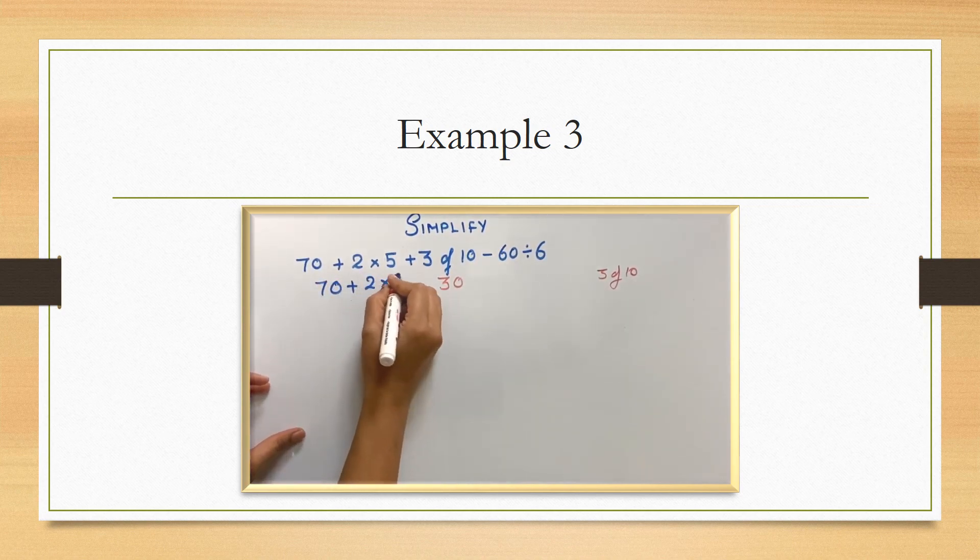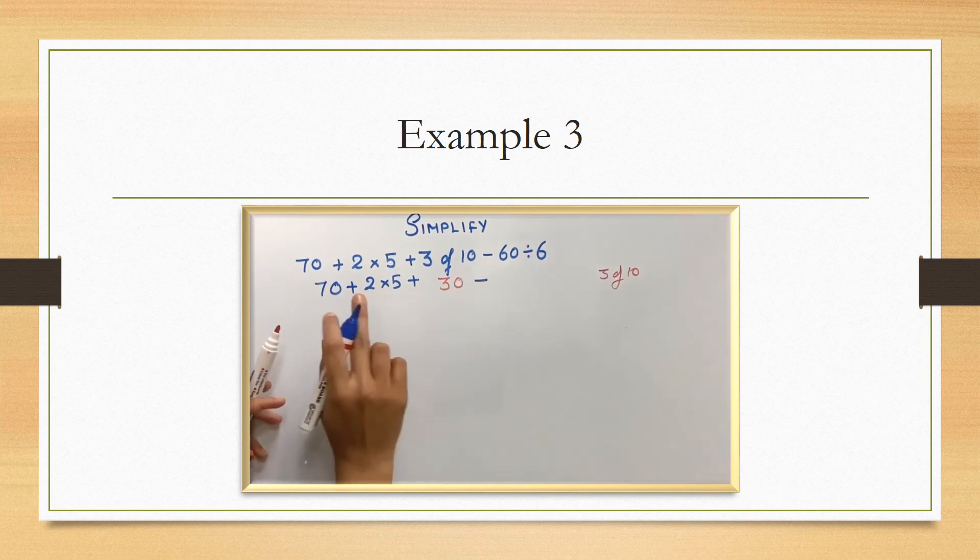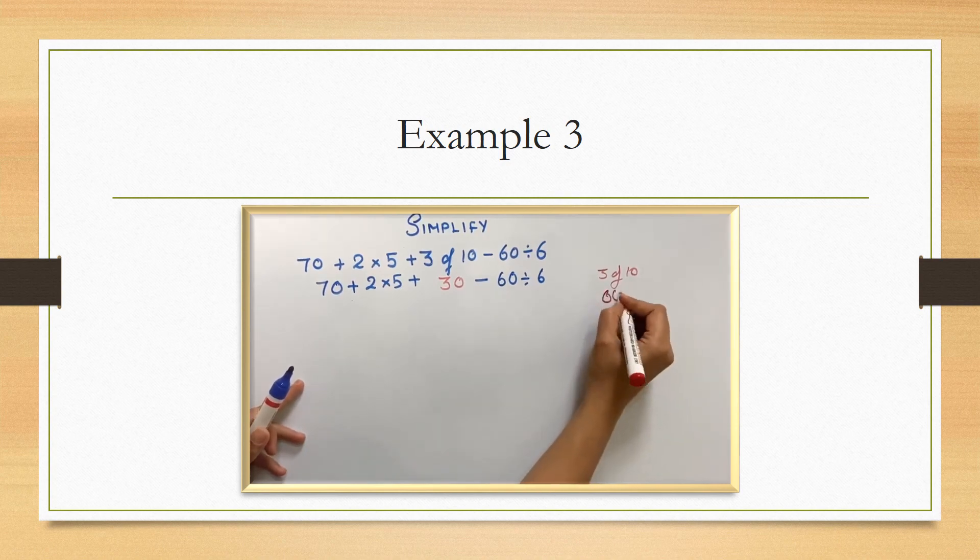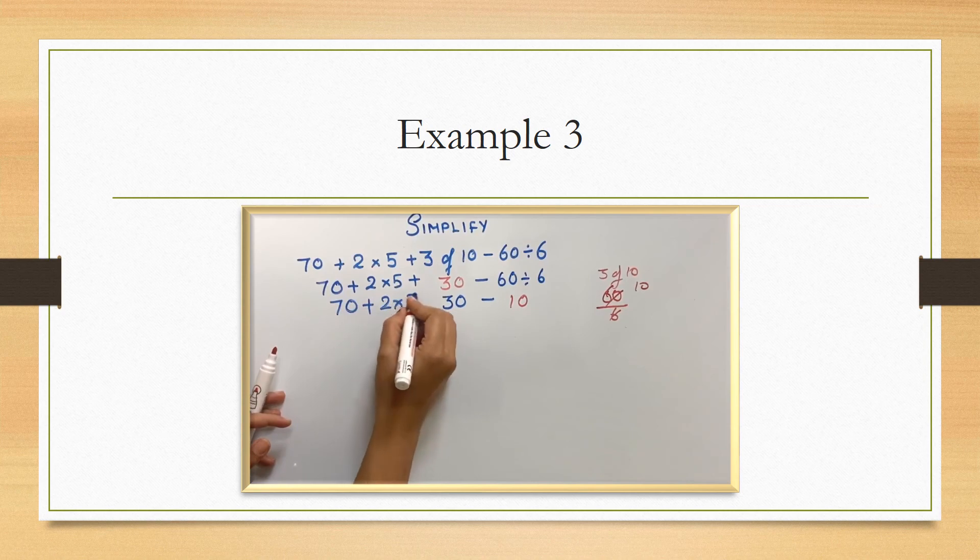After bracket, it's off. We have finished. Next, it's division. So 60 divided by 6. That's the next operation we have to do. 60 divided by 6 is 10. After division, it's multiplication. We have multiplication 2 into 5. It's 10.